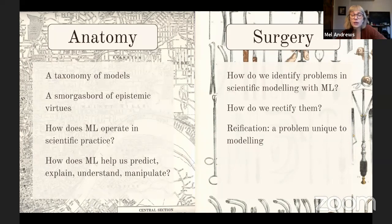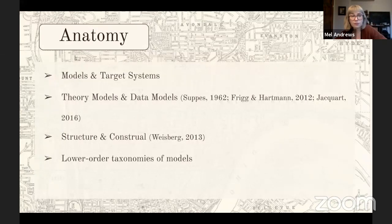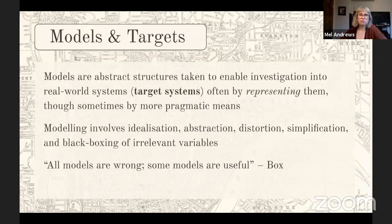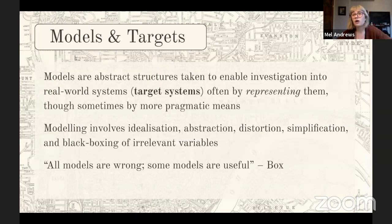I'm going to look at a problem unique to scientific modeling known as reification. On the anatomy side, I'll draw these distinctions briefly. There's a distinction between models and target systems, between theory models and data models, and between structure and construal. Models are taken to be abstract structures that enable investigation into real-world systems known as target systems. This is often said to be done by representation — we take a model to be representative of the target system — though some have a more pragmatic conception of what purchase models give us over target systems.